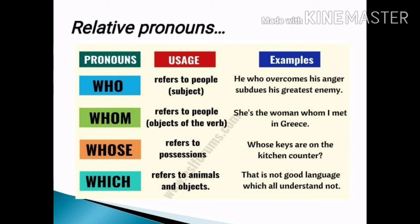The relative pronoun 'whom' is used to refer to people in the object position. For example: 'She is the woman whom I met in Greece.' Here 'she' is the subject, and 'the woman' is in the object position. Since we are speaking about the object — the woman — we use the relative pronoun 'whom'.